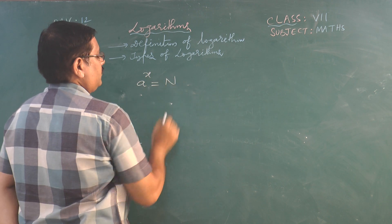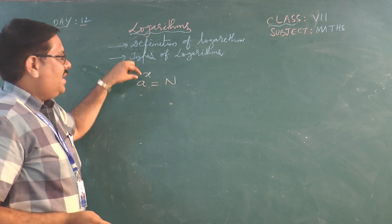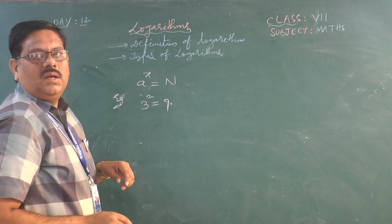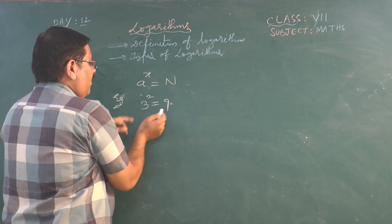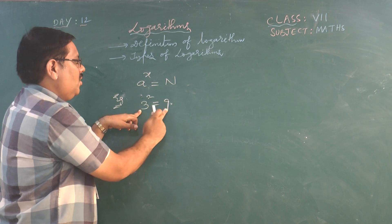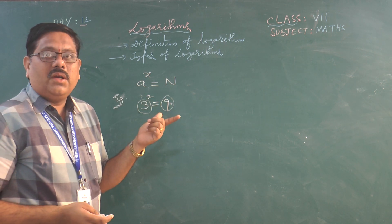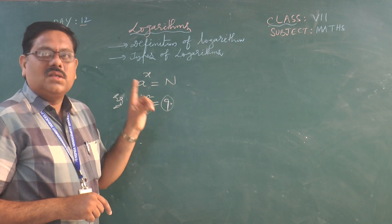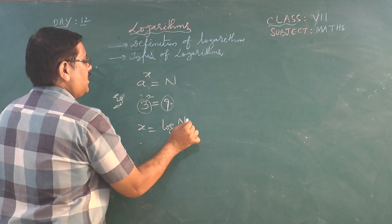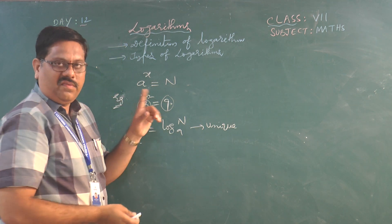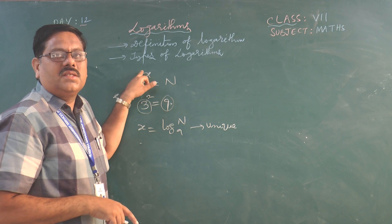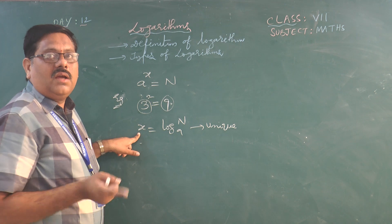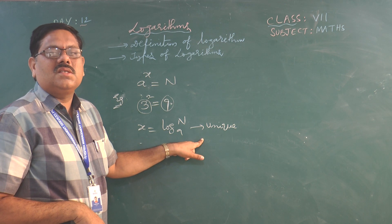If a^x = n, then x is a unique value. For example, 3^2 = 9 — to get 9 with base 3, the exponent must be 2; no other power works. So 2 is the only value such that 3^2 = 9. Similarly, x = log_a(n) is also unique: if the argument and base are the same, x cannot take more than one value. This is called the uniqueness property.